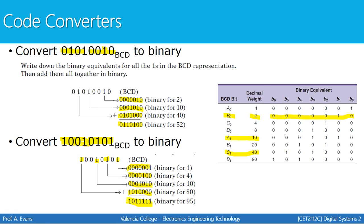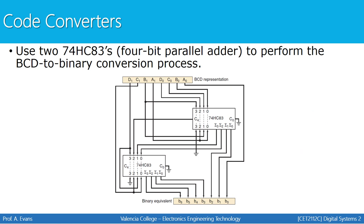A code converter is a circuit that performs this process automatically. Here's an example using two 74HC83 four-bit parallel adders to perform BCD to binary conversion. The BCD representation is input, some bits are transferred to one adder, others to another, and some inputs are outputs from the first adder. The result is a seven-bit binary equivalent for the BCD input.